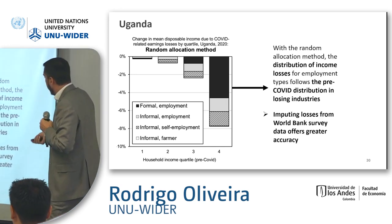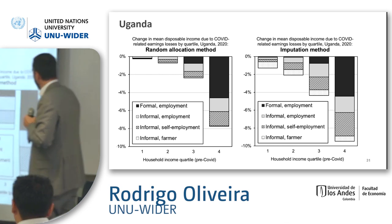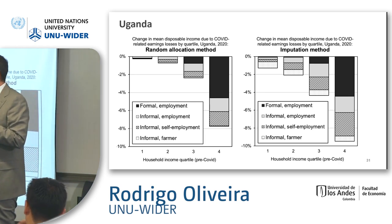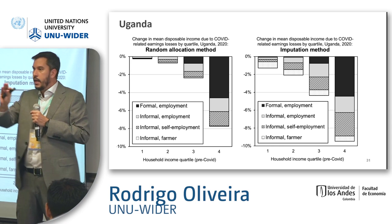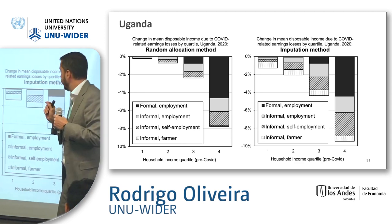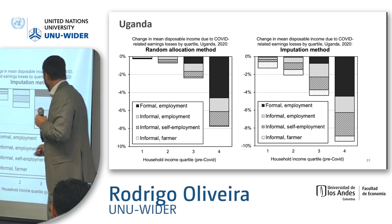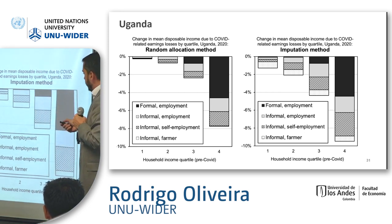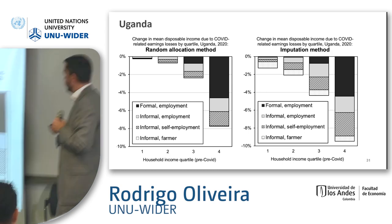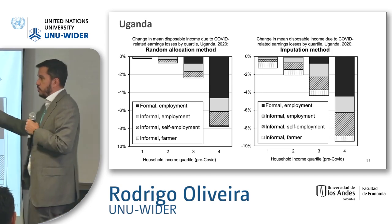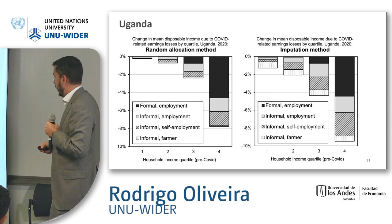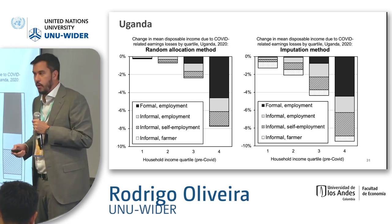We also did the imputation method, which uses a regression to estimate the probability of people losing income based on the World Bank phone survey, then takes those estimated coefficients based on observed characteristics and inputs them into the model's input dataset. The shape of the figures is quite similar across both methods, but the main difference is that with the imputation method — since we have formal/informal status in the World Bank phone survey — we can observe a higher effect on informal than formal employees.